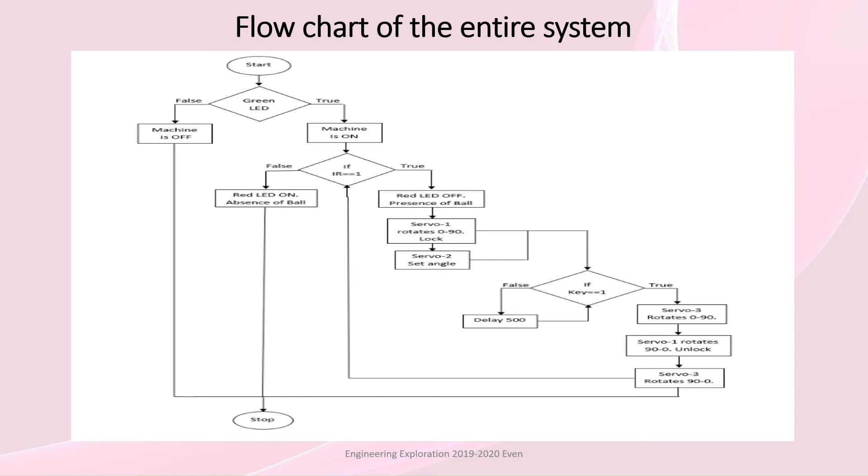IR sensor sends a message. When IR is not equal to 1, red LED glows that shows the absence of the ball and the process stops. When IR gives message equal to 1, servo 1 rotates 0 to 90 and it gets locked. Servo 2 sets the angle.